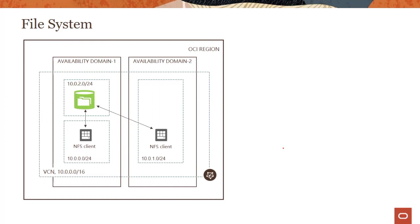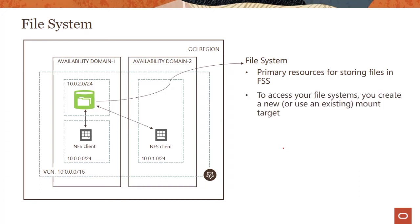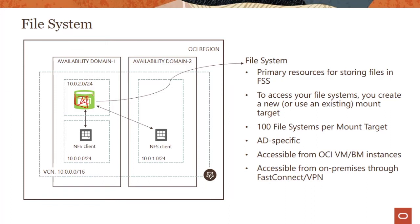So to summarize: a mount target is a highly available NFS endpoint where you run your file systems. A file system is the primary resource for storing files in the file storage service. To access your file systems you can use an existing mount target, or create a new one. You can create up to 100 file systems per mount target. It's AD-specific, and you can access the file system from virtual machines, bare metal instances, or from on-premises through FastConnect or VPN.